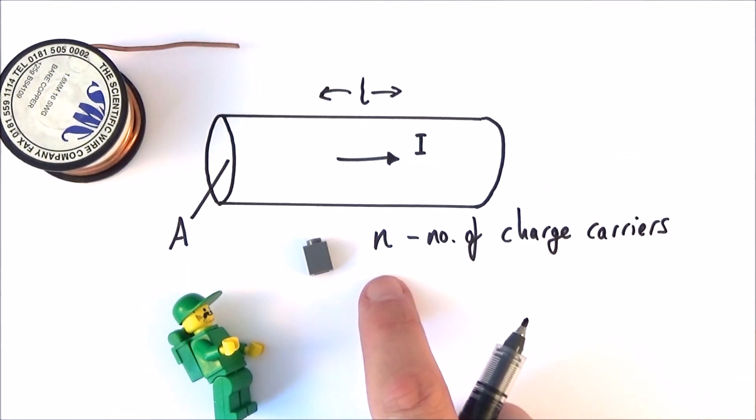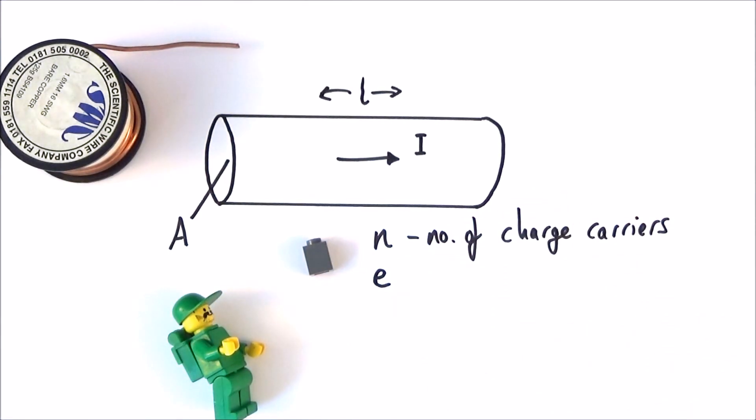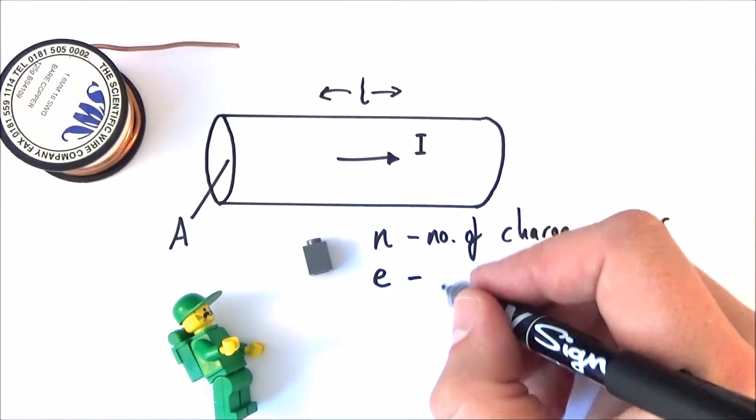And all of these individual charge carriers, they all have a certain charge. And if they're electrons, then it might be that the charge on each is a value of e, where e is this fundamental charge, the kind of the smallest value, which is 1.6 times 10 to the minus 19 Coulombs.